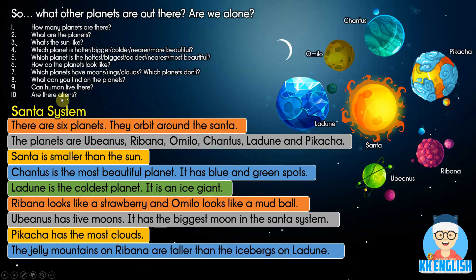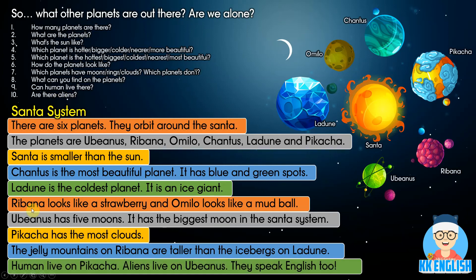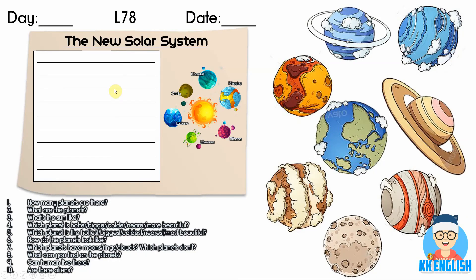And finally: can humans live there? Are there aliens? Humans live on Picaccia. Aliens live on Eubinus — and they speak English too! So if your English is good enough, you can talk to the aliens.